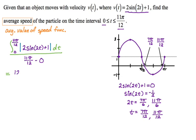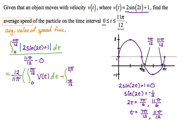Inverting the denominator, dividing by 11π/12 is the same as multiplying by 12 over 11π. The first integral goes from 0 to 7π/12 of v(t) dt. Then, because between 7π/12 and 11π/12 the definite integral would be negative, I subtract the integral from 7π/12 to 11π/12 of v(t) dt — that guarantees I get a positive value from that expression. That's all the setup work, and now we do the fundamental theorem calculations.